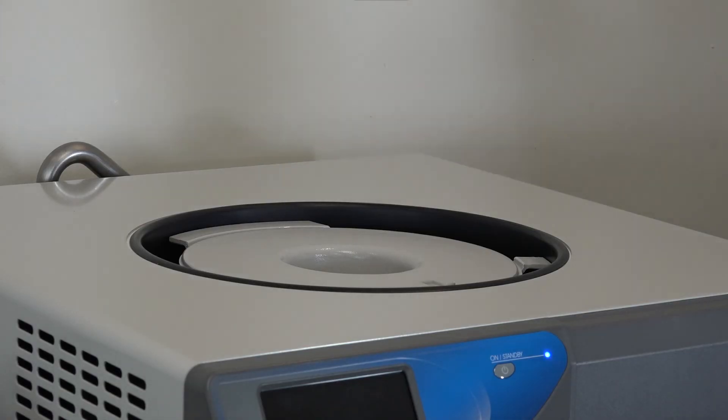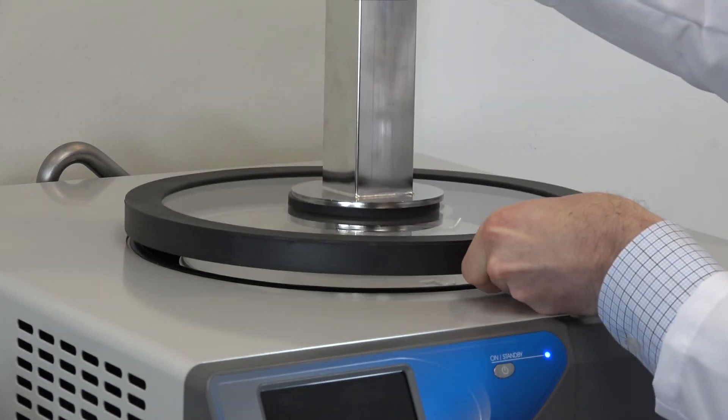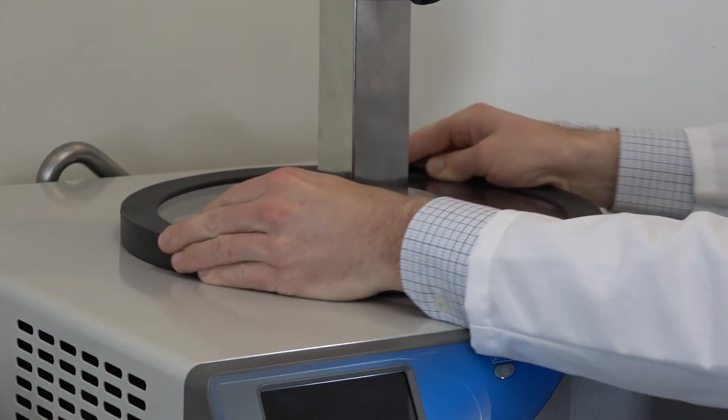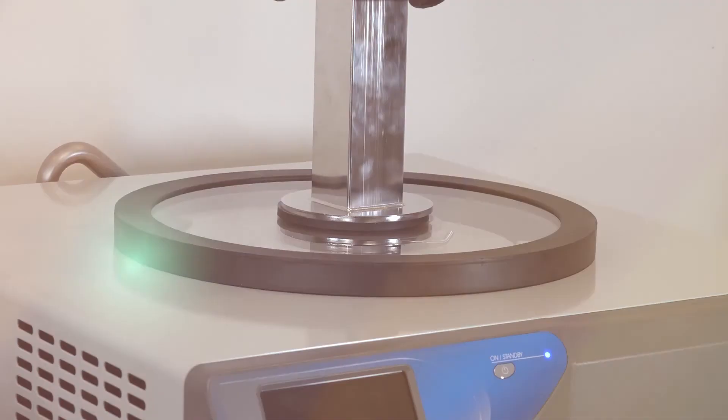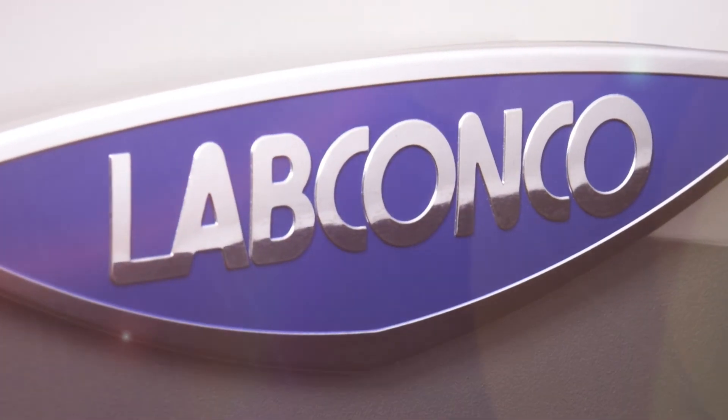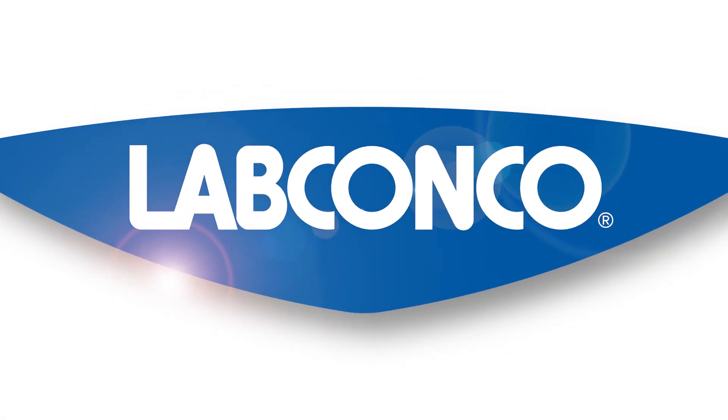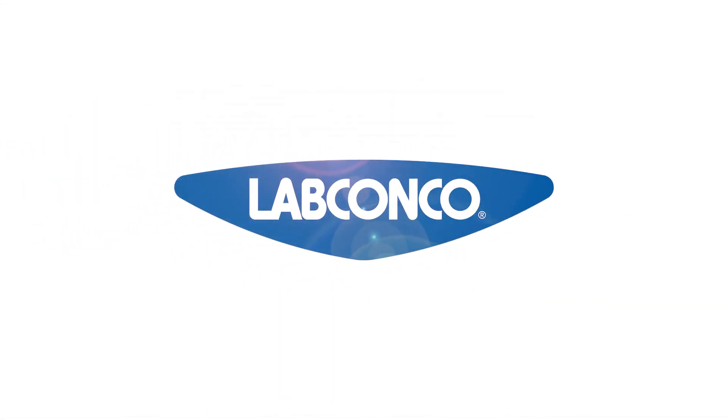Turn the completed assembly over and install it on top of the freeze dryer using the gasket centering ring to ensure that the lid is properly centered on the rim of the collection chamber. Installing a benchtop Freezone freeze dryer is now complete. Find out more about using your Freezone freeze dryer at labconco.com.